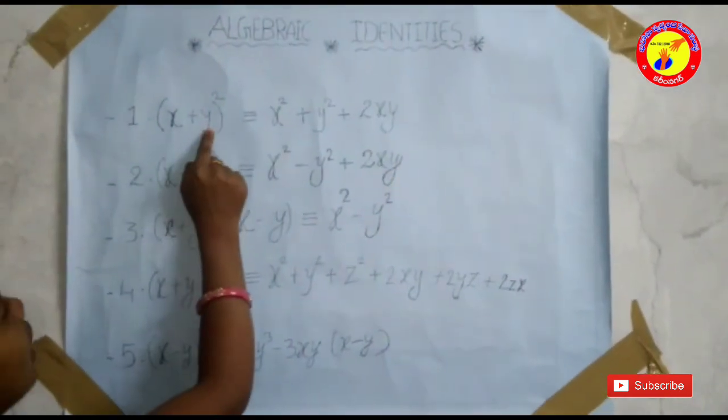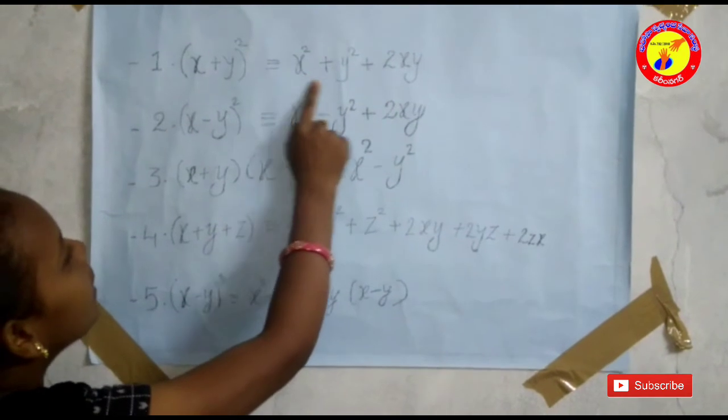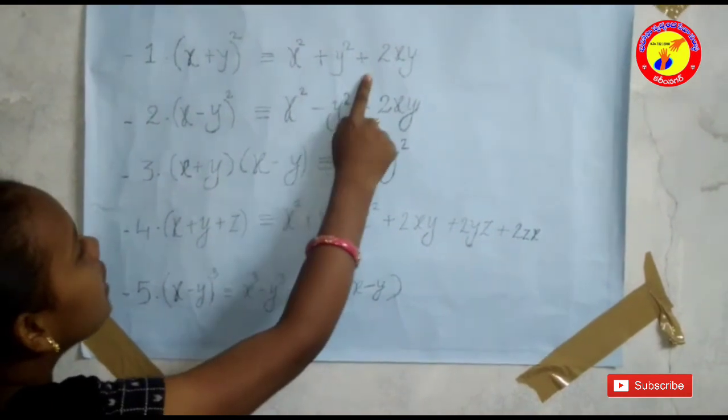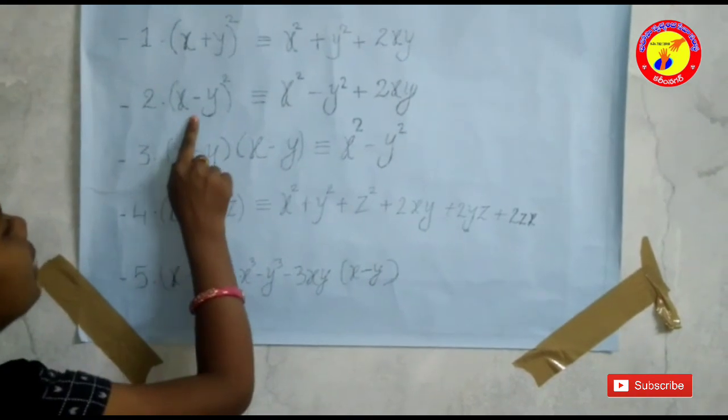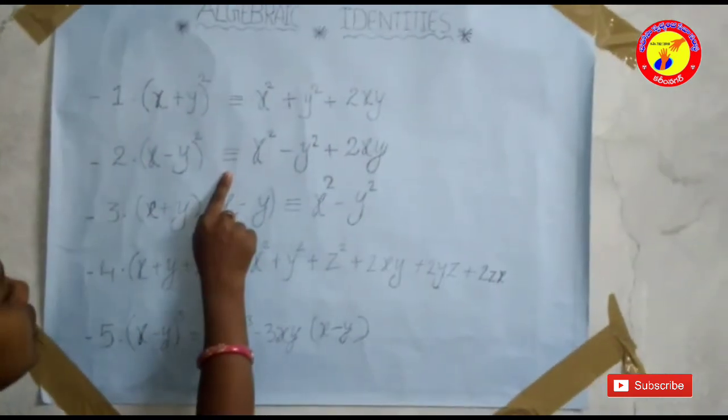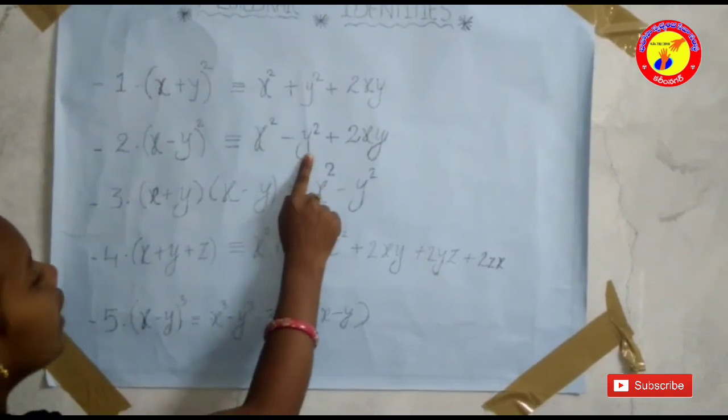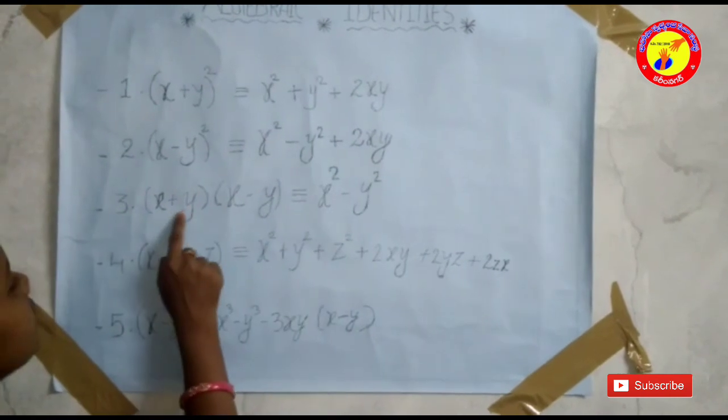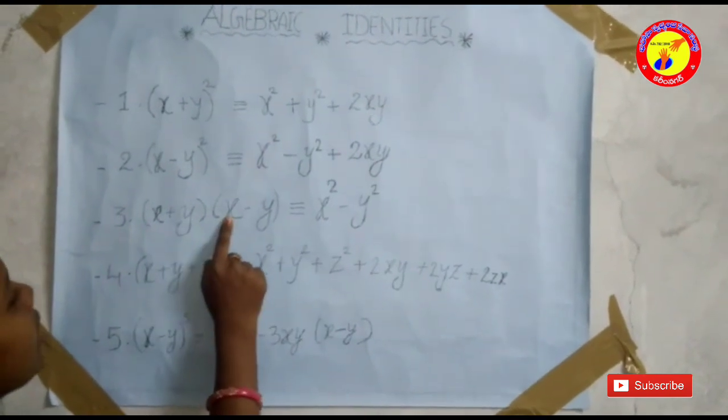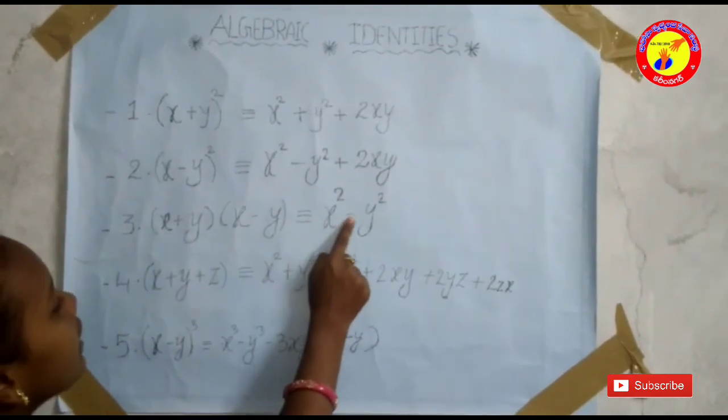First, x plus y all square is equal to x square plus y square plus 2xy. Second, x minus y all square is equal to x square plus y square minus 2xy. Third, x plus y into x minus y is equal to x square minus y square.